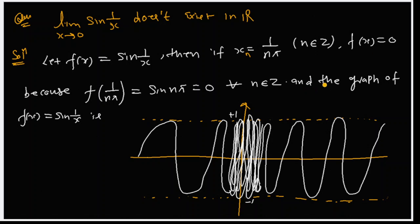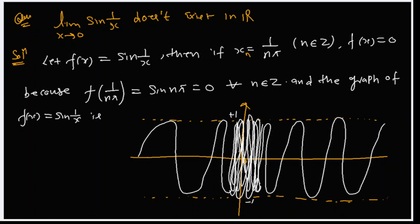For all n belonging to the integers, the function value is 0 along this sequence. But when we move toward 0 from the other side, the function oscillates. We can take the value approaching from one side, but the function takes values between plus one and minus one along different sequences.